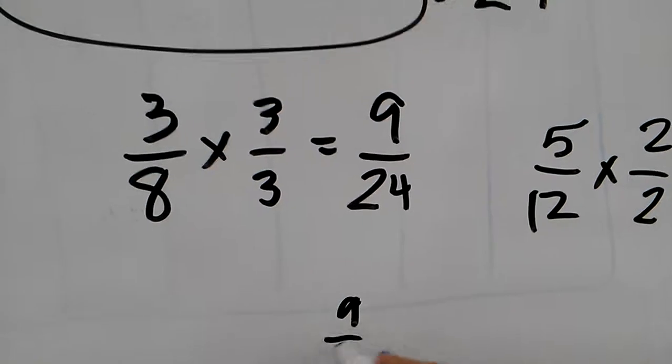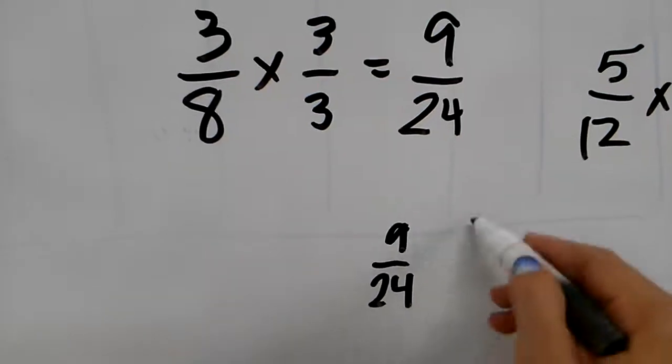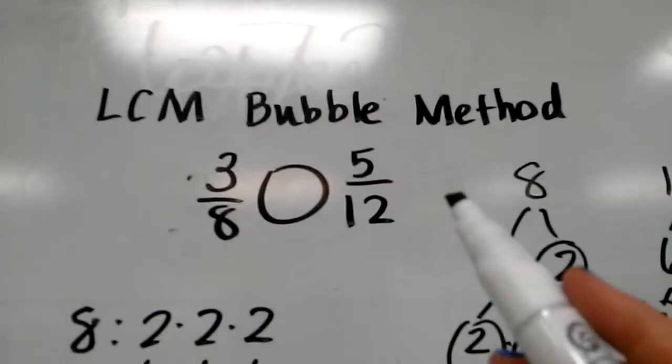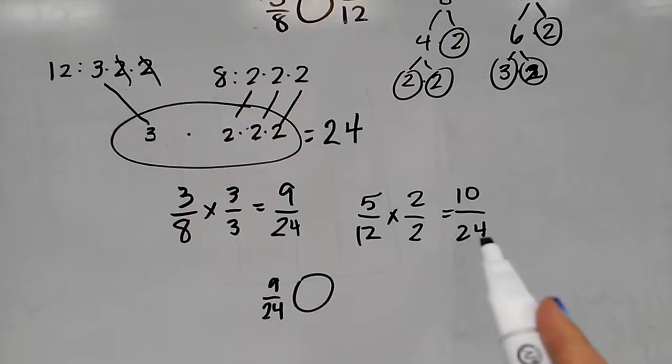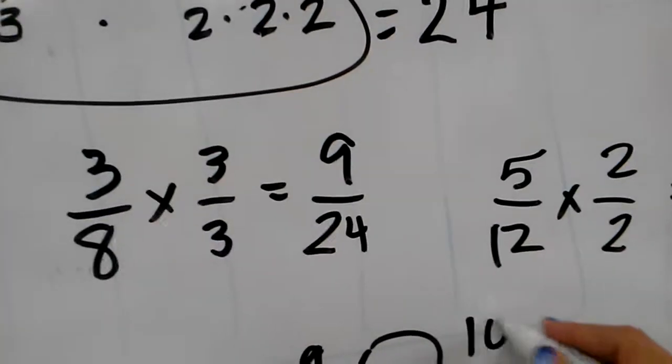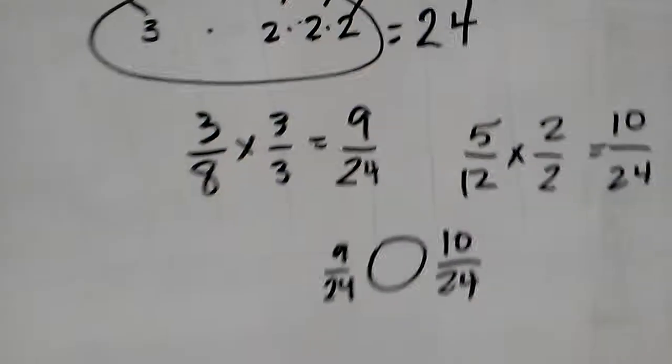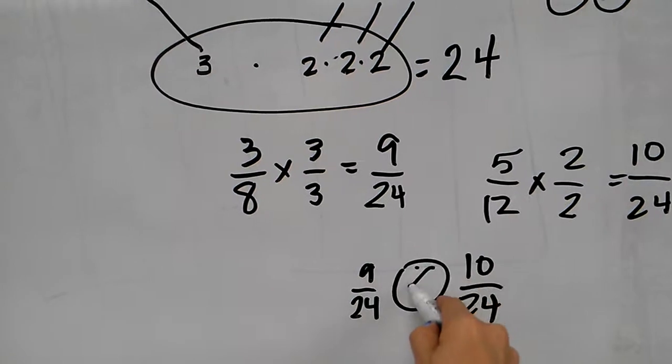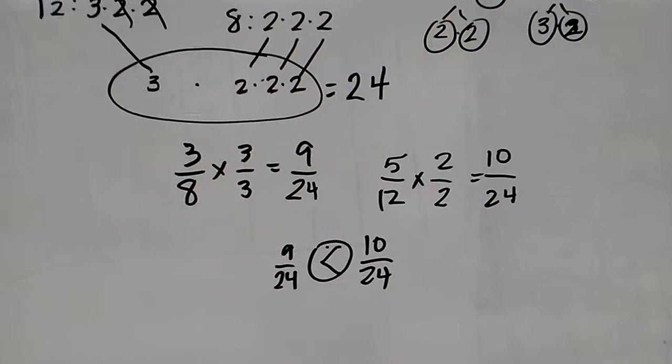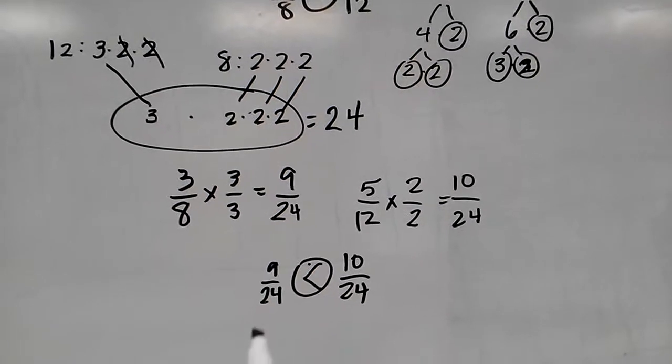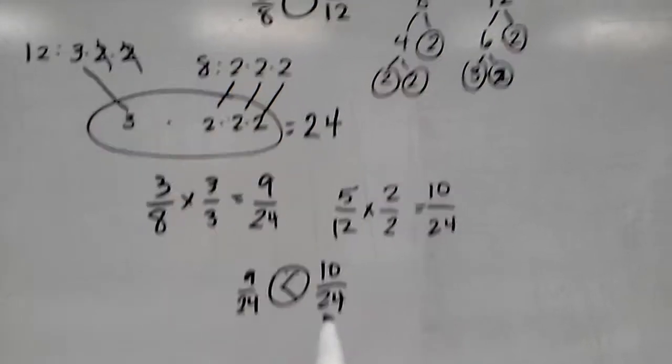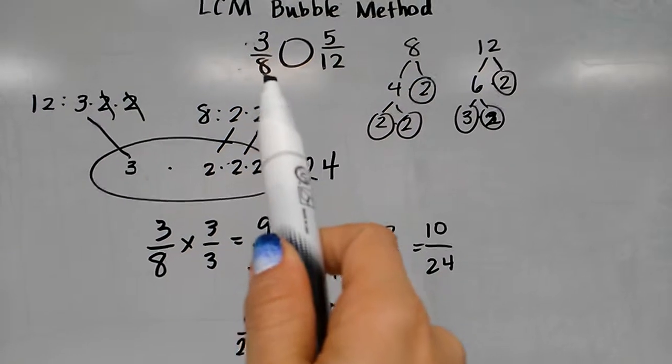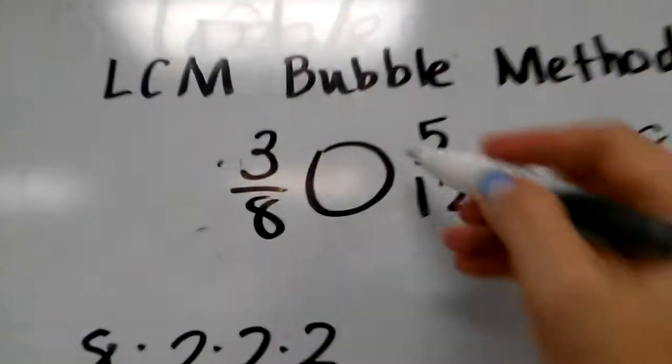At this point I would rewrite my problem. So for 3/8, my equivalent fraction was 9/24. For 5/12, my equivalent fraction was 10/24. So now it's very easy to see that 9/24 is less than 10/24 because they have a common denominator. Since I know that 9/24 is less than 10/24, I now know that 3/8 is less than 5/12.